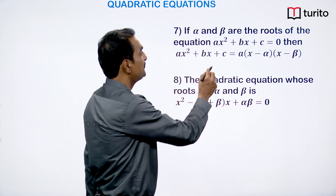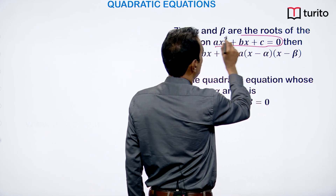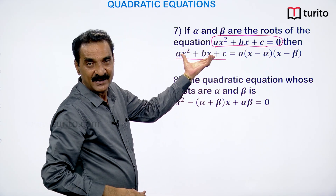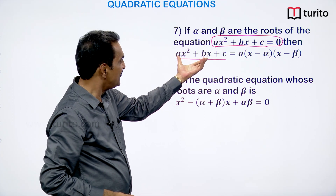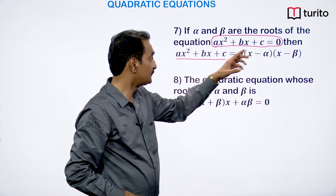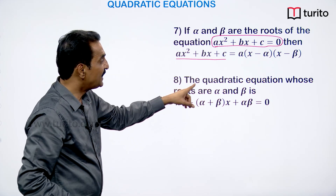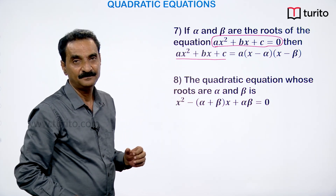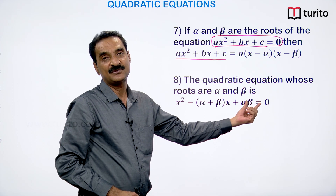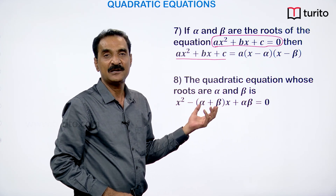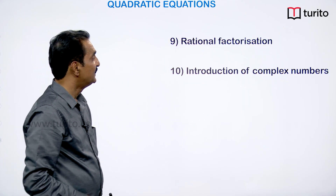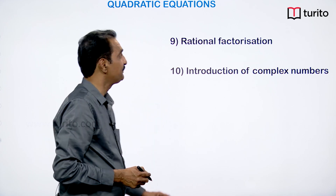If α and β are the roots of ax² + bx + c = 0, then the quadratic expression can be written as a(x − α)(x − β). The quadratic equation whose roots are α and β is: x² − (sum of roots)·x + (product of roots) = 0.